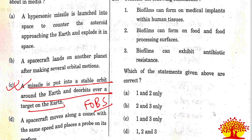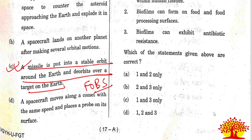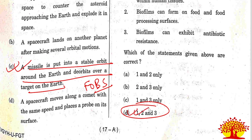Thirty-seventh question on biofilms: all three statements are correct. Biofilms can form on medical implants within human tissue, on food and food processing surfaces, and can exhibit antibiotic resistance. Statements 1, 2, and 3 are all correct.